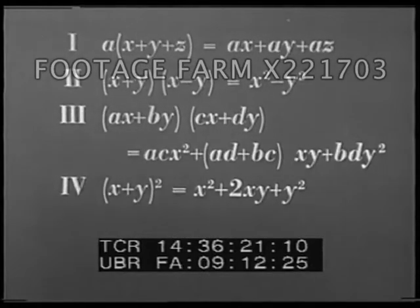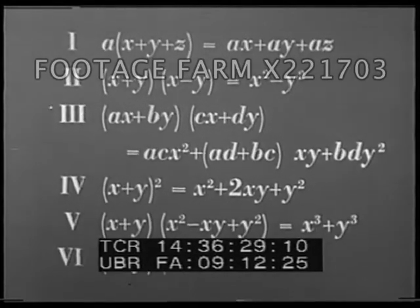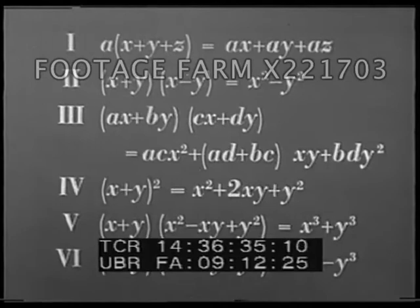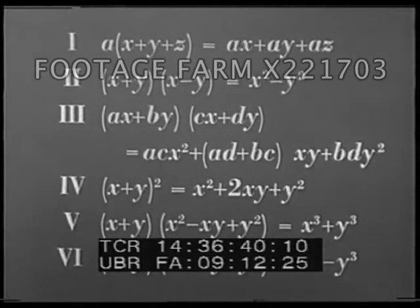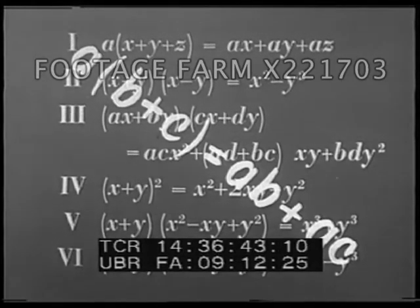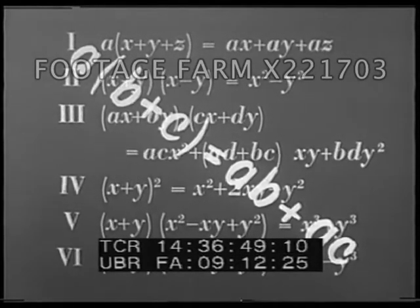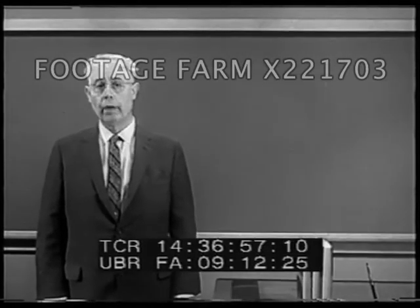For example, one textbook I looked at sets up four types of factoring problems, and another added two more. But there is a pattern here, and it applies to every one of these so-called types. Every one of them is an application of the distributive law: A times B plus C equals AB plus AC.